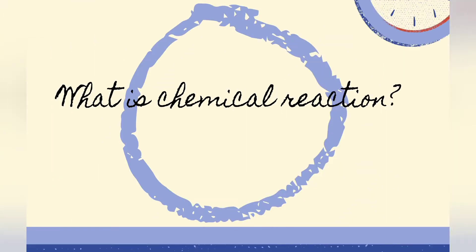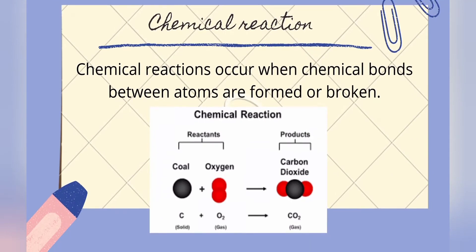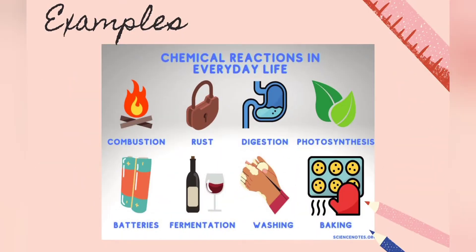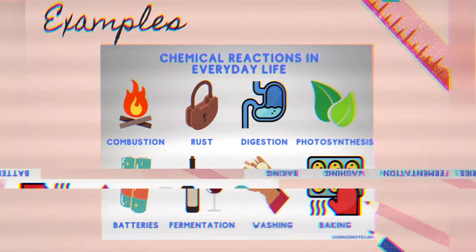What is a chemical reaction? Chemical reactions occur when chemical bonds between atoms are formed or broken. It involves chemical change of atoms and molecules. This picture shows different examples of chemical reactions.